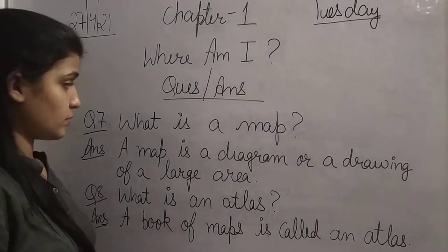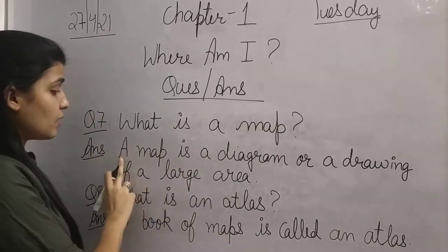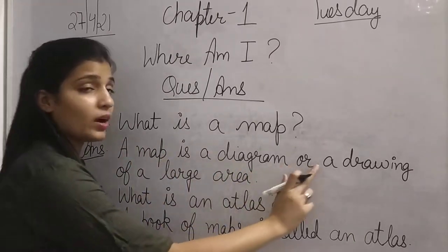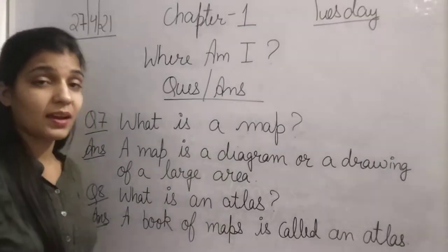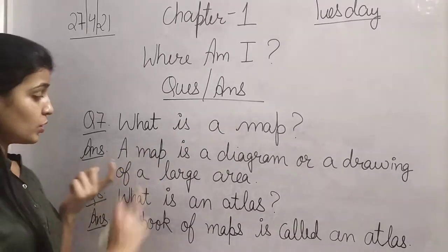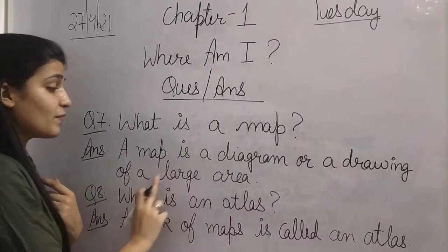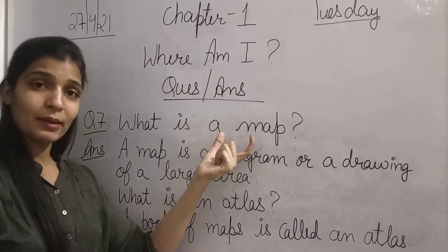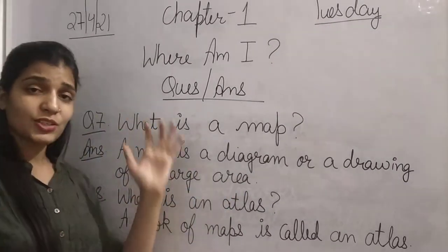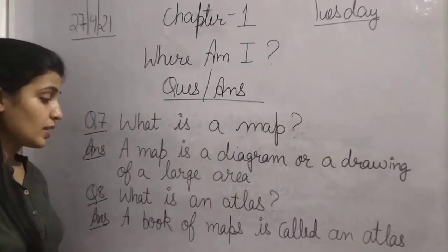The next question is: What is a map? A map is a diagram or a drawing of a large area. Jo map hota hai, wo kisi bhi large area ka diagram hota hai ya drawing hota hai.